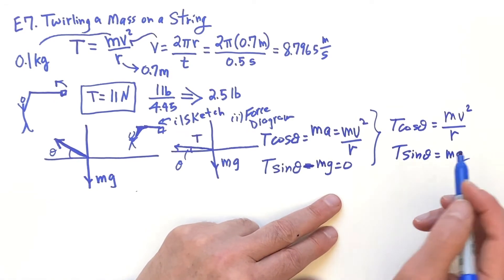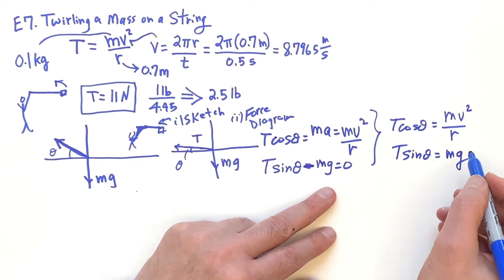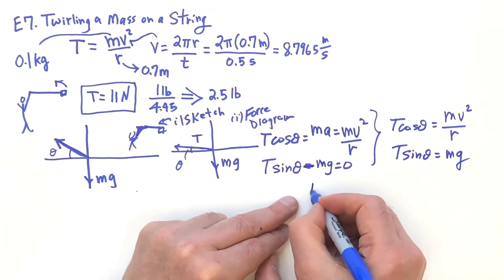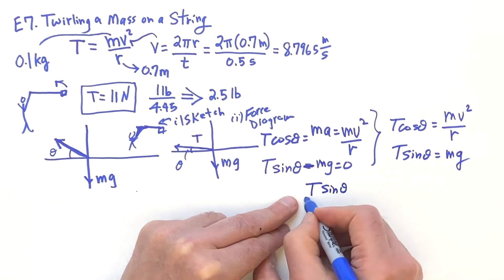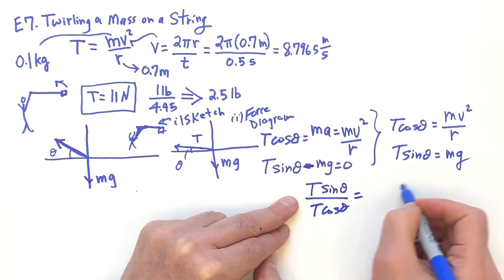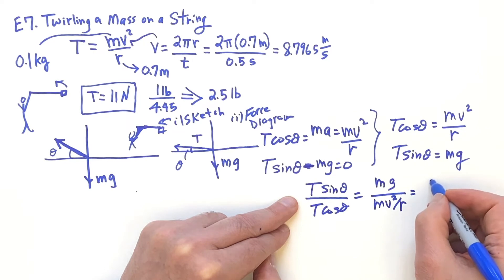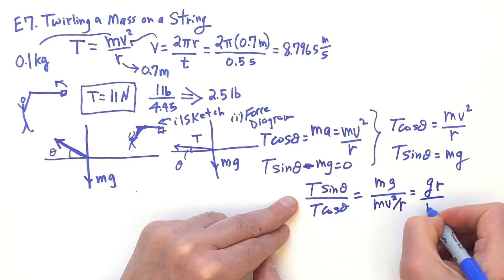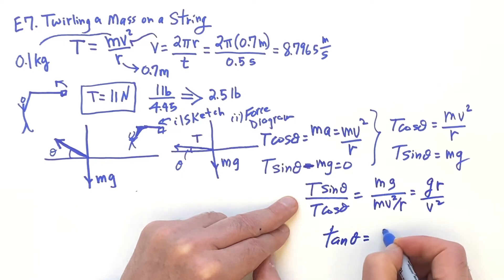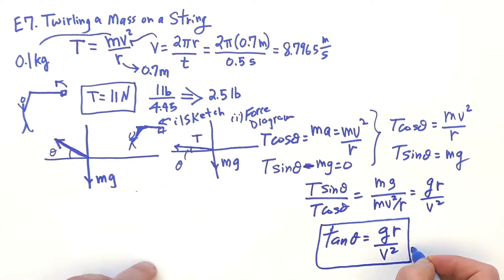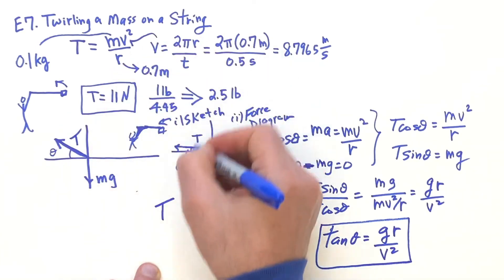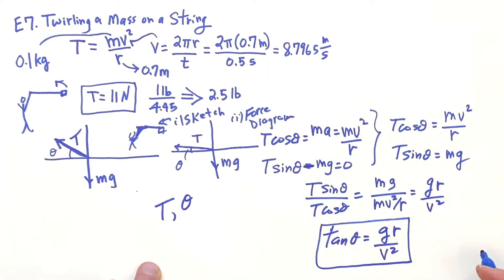So now I'm going to solve for that angle and show you that it's small for the parameters that we have. Here I'm going to divide these equations. I'm going to take this equation, T sine of theta, the left side, divided by the left side here. So this is going to be MG divided by MV squared over R. The M's will cancel and I'll get GR over V squared. So the tangent of theta is GR over V squared. There's two unknowns here, really. It's the tension T and the angle theta. You have two equations with two unknowns you can solve. So here, I'm going to find what that angle is.